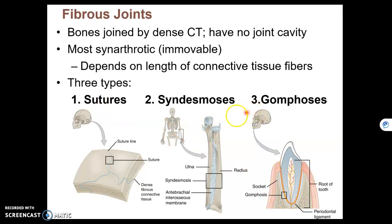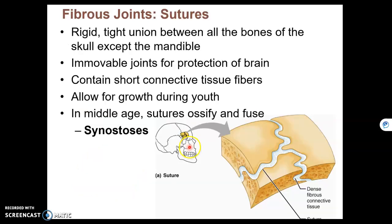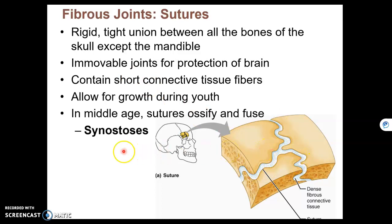Sutures, like the squamous suture, have fibrous connective tissue connecting two cranial bones together. These are immovable joints, so they're synarthroses. And eventually, as we age, they completely ossify. We call that a synostosis when the ossification is complete.